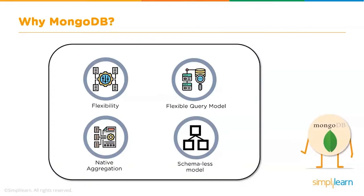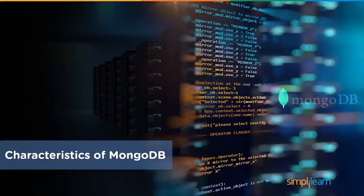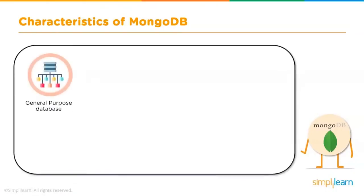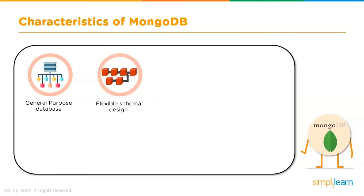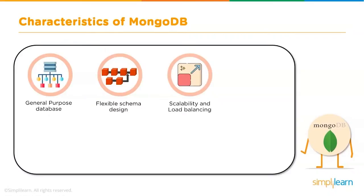Now that you know what MongoDB is and why it's used, let's look at its characteristics. First, it's a general purpose database — MongoDB can serve heterogeneous loads and multiple purposes within an application. It also has a flexible schema design: document-oriented approaches with non-defined attributes that can be modified on the fly is a key contrast between MongoDB and any relational database. Next is scalability and load balancing — it's built to scale both vertically but most importantly horizontally. Using sharding, an architect can share load between different instances and achieve both read and write scalability, while load balancing happens automatically and transparently via the shard balancer.